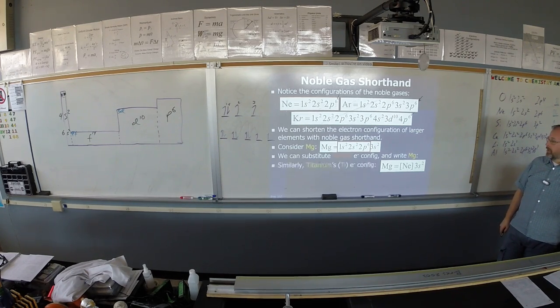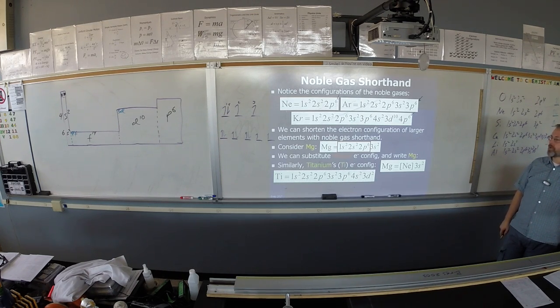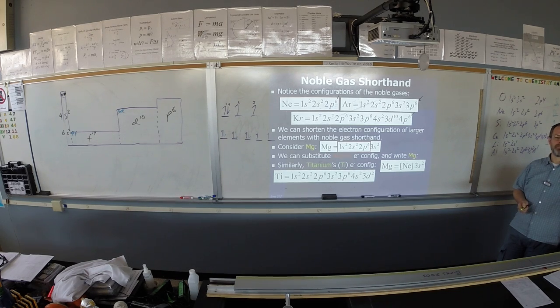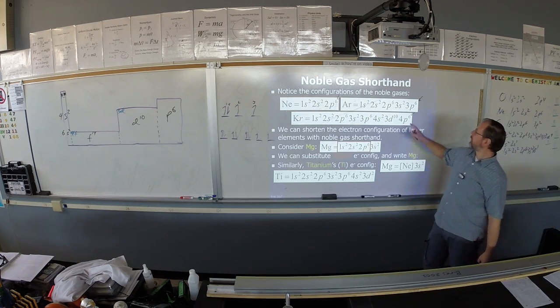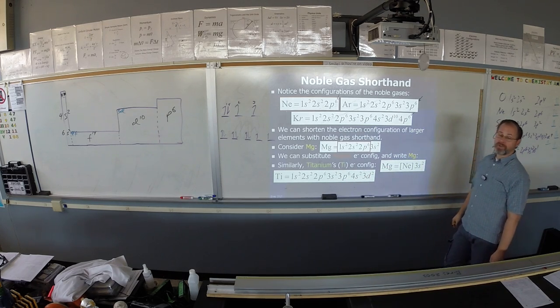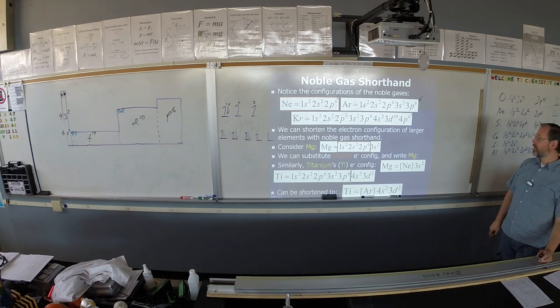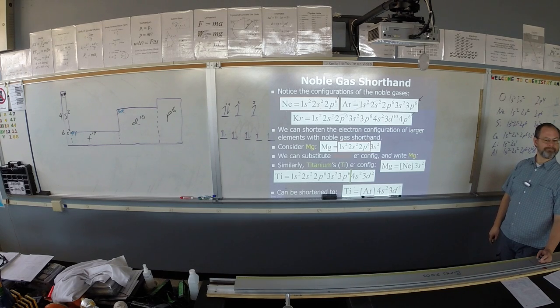So titanium has a configuration 1s2 2s2 2p6 3s2 3p6 4s2 3d2. It's the second element in the first d block. You could write all of that, or you could look at the noble gas right before titanium. What is the noble gas right before titanium? Argon, exactly. So you just kind of backpedal a little bit and you find argon. If you want to shorten titanium's configuration, you just make a little slice at 3p6 and write argon 4s2 3d2.